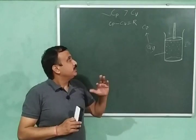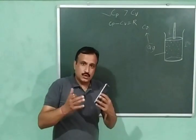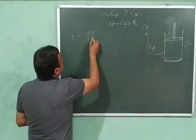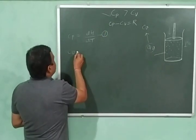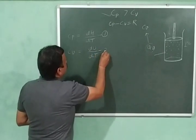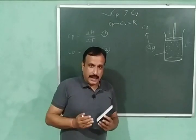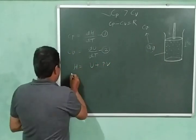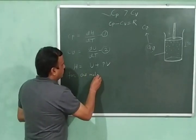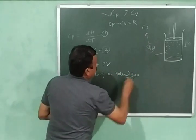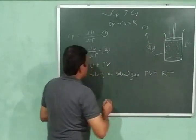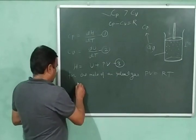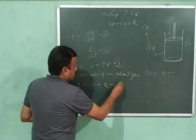Now we will derive the relationship between CP and CV. As I told you in my previous video, for an ideal gas, CP is equal to dH/dT — let this be equation one — and CV is equal to dU/dT — equation two. For an ideal gas, enthalpy H is equal to U plus PV. And for one mole of an ideal gas, PV equals RT. Substituting PV into the enthalpy equation gives H equals U plus RT — let this be equation four.